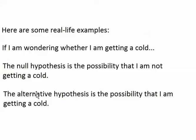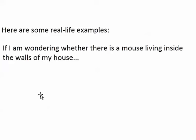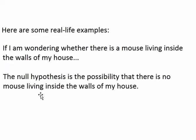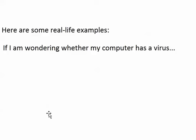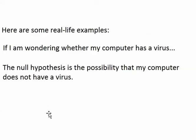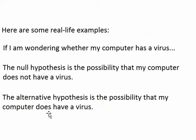The reason it's called the alternative hypothesis is just because it's the alternative to the null — it's the opposite of the null hypothesis. Here's another example: if I'm wondering whether there's a mouse living inside the walls of my house, the null hypothesis would be the possibility that there's no mouse, and the alternative would be the possibility that there is a mouse. Similarly, if I was wondering if my computer has a virus, the null would say that I don't have a virus, and the alternative would say that my computer does have a virus.